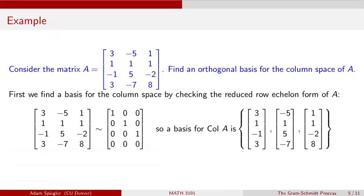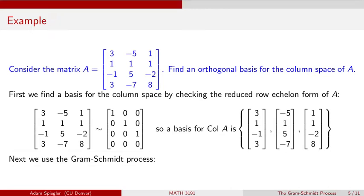The column space of A is a subspace of R4 with three basis vectors: the first is the first column of matrix A, (3, 1, −1, 3); the second is the second column, (−5, 1, 5, −7); and the third basis vector is the third column of matrix A, (1, −1, 2, 8). Now we want to find an orthogonal basis for the column space. These basis vectors are not orthogonal to each other, so we're going to apply the Gram-Schmidt process.